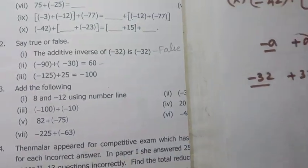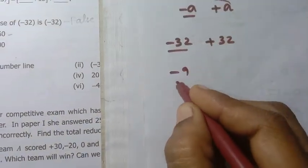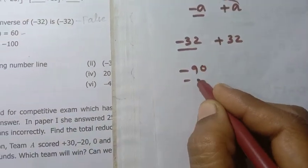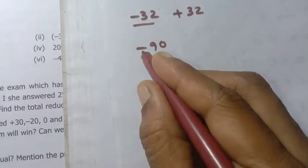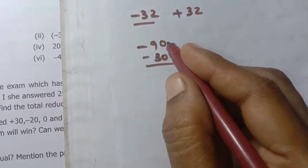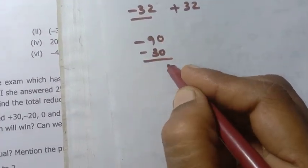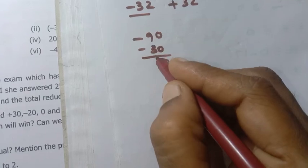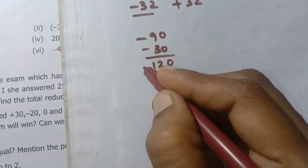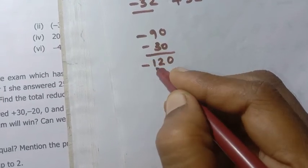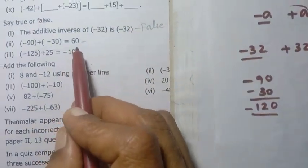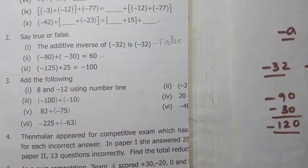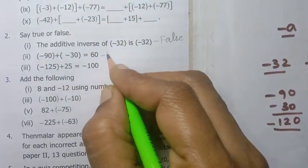Second one: minus 90 and minus 30 — same sign. Same sign means we add. 9 plus 3 is 12, same sign is minus, so the result is minus 120. The statement gives a different value, so this is false.